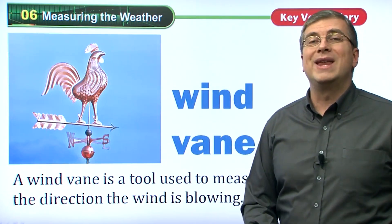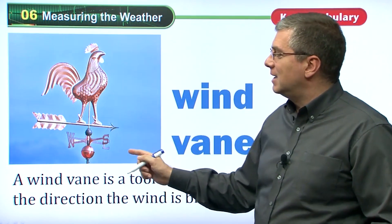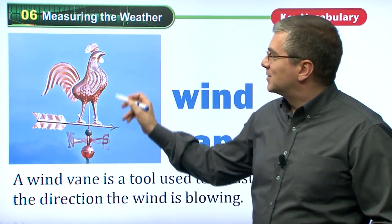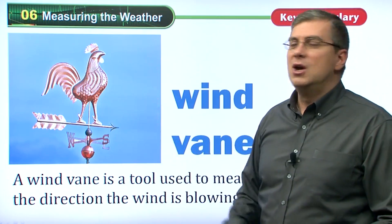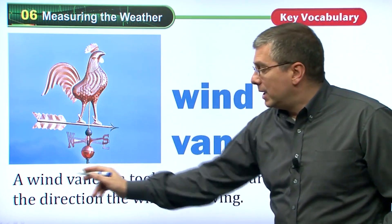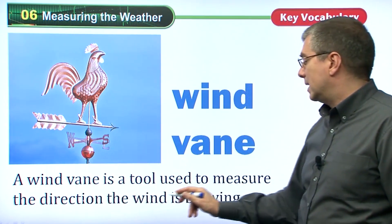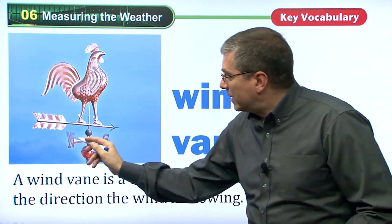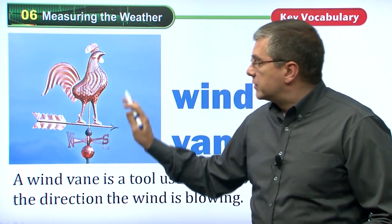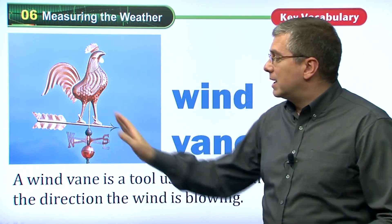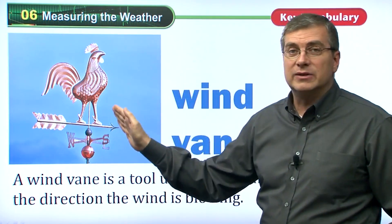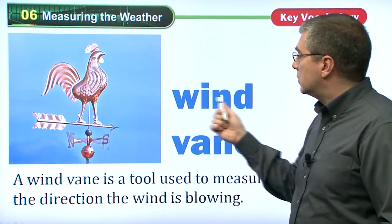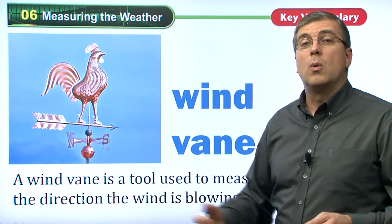We also use another tool called a wind vane. This is an example of a wind vane — it looks like something you'll see on a farm. Farmers like this because there are many chickens or roosters on a farm, so this is a common shape. American farms often have this type of wind vane. A wind vane is a tool used to measure which direction the wind is blowing. We have west, east, south, north — depending on which way that rooster is pointing, we can see which direction the wind is blowing.